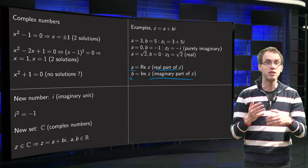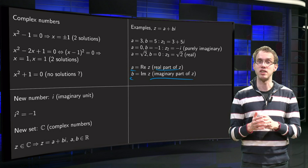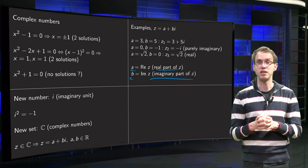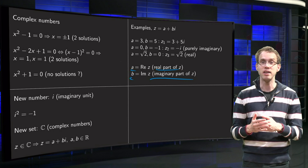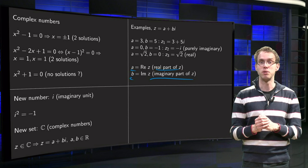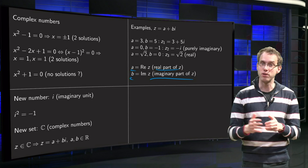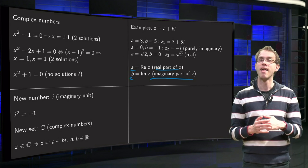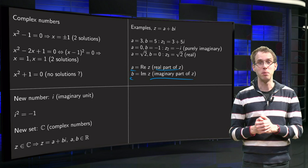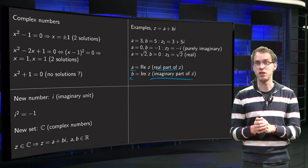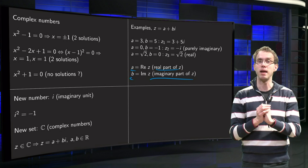Of course we can choose any a and b we like, so we can set a to 0, so we set the real part to 0. What do we get then? If we take for example b equals minus 1, we get the complex number 0 plus minus 1 times i equals minus i. And such a special complex number, which has a real part 0, is called purely imaginary.